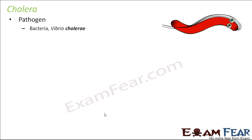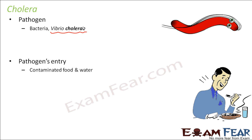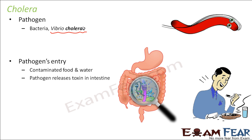Now we will talk about cholera. The pathogen for cholera is a bacterium called Vibrio cholerae. It enters our body through contaminated food and water — similar to typhoid, both these diseases spread through contaminated food and water. The pathogen releases a toxin in the intestine. Diseases that spread through food and water impact the intestine because food goes directly into the stomach and then to the intestine.